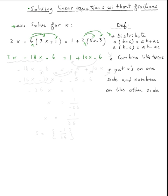That's the first step. Second step: always combine the like terms. What am I going to combine? I'm going to combine these. 2x minus 18x will be negative 16x minus 6 equals, then I'm going to combine 1 minus 6 which is negative 5 plus 10x.